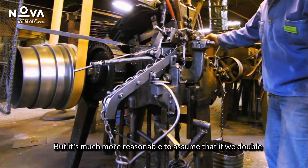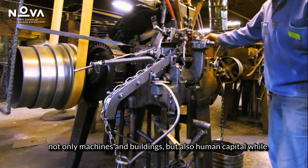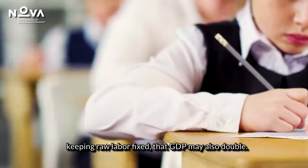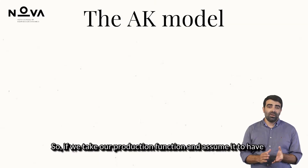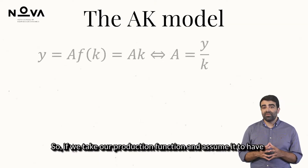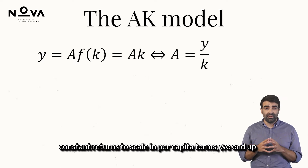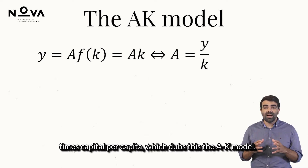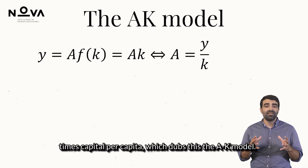But it is much more reasonable to assume that if we double not only machines and buildings, but also human capital, while keeping raw labour fixed, then GDP may also double. So if we take our production function and assume it to have constant returns to scale in per capita terms, we end up with the expression that income per capita equals technology times capital per capita, which is dubbed the AK model.